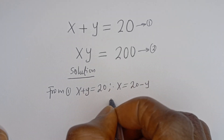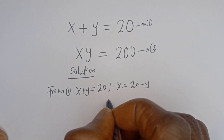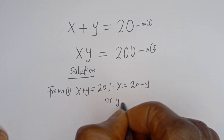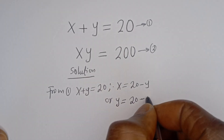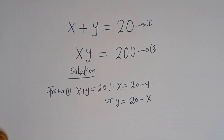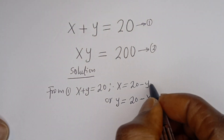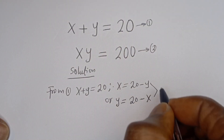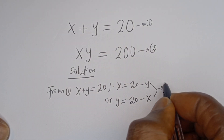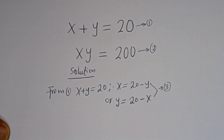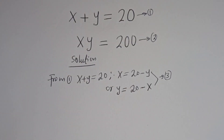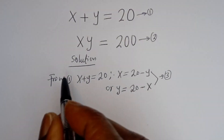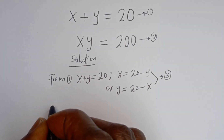From equation 1, X plus Y is equal to 20, therefore X is equal to 20 minus Y, or Y is equal to 20 minus X. Let's call this equation 3. Now if Y is equal to 20 minus X, from equation 2...